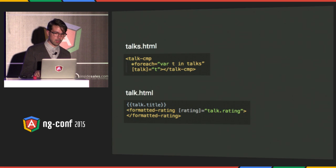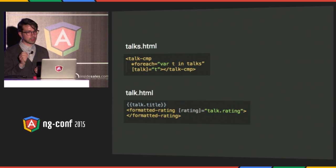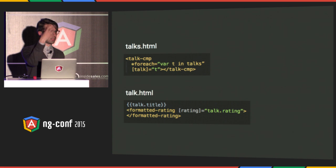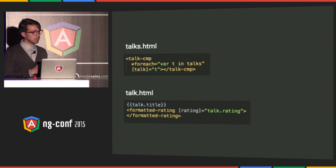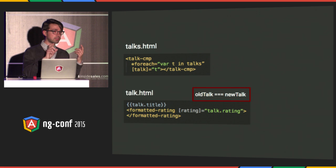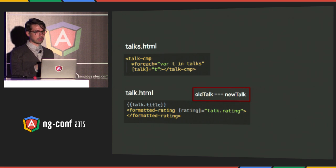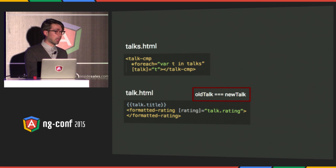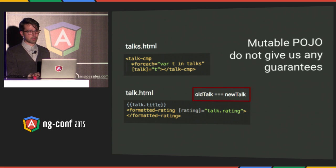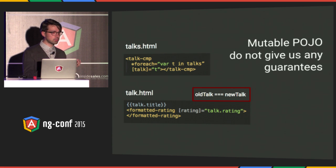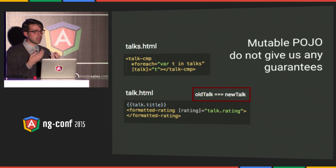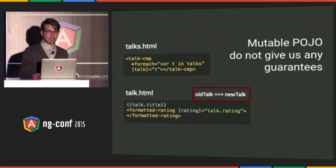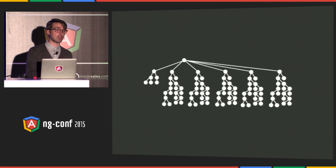Let's look at this example. We have two components: a talks component containing a list of talk components. Let's say change detection checks the model for one of the talk components and it happens to be the same instance. Can we skip checking the template of that component? No, because the object is mutable. Even though the instance is the same, the title can change. Angular has to be conservative and check everything, because mutable plain old JavaScript objects don't provide enough guarantees about how they change, so we must go through every single component every single time.